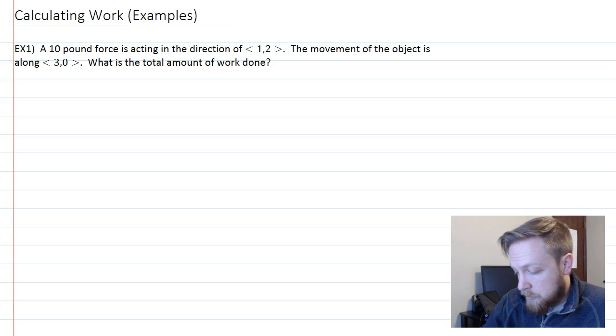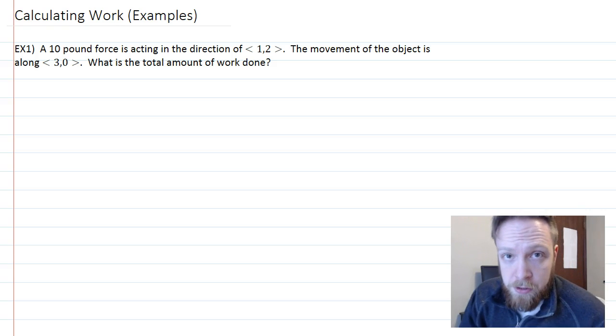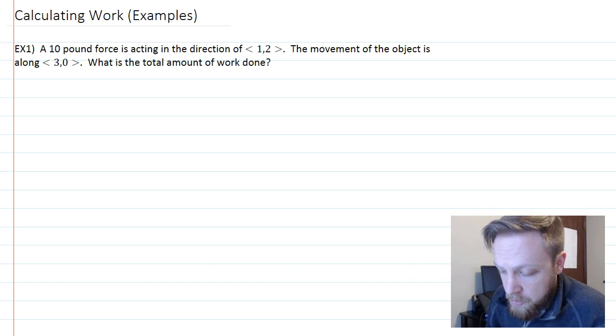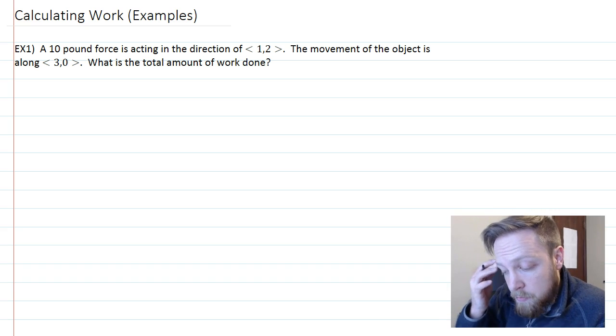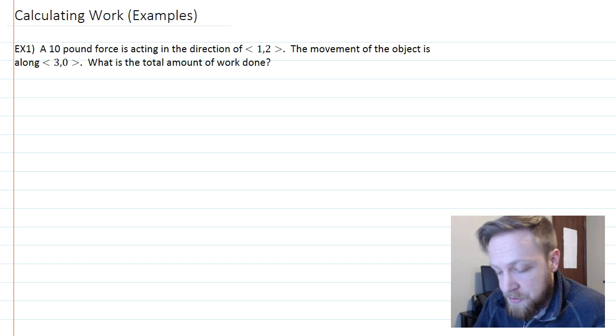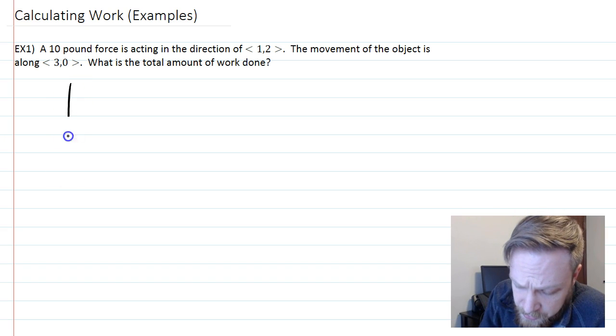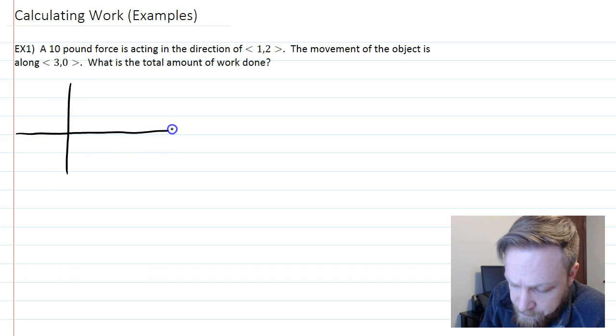We have two examples now where we're going to be calculating work using vectors and the dot product. This is one I actually stole from the textbook: a 10 pound force is acting in the direction of <1,2> and the movement of the object is along <3,0>. What is the total amount of work done?